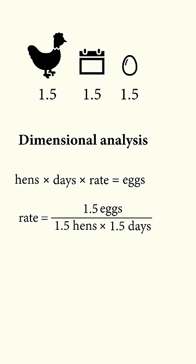So we have 1.5 eggs produced by 1.5 hens multiplied by 1.5 days, and that's a rate of 2 over 3 eggs per hen-days.